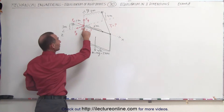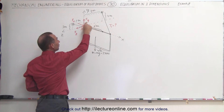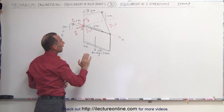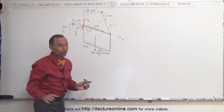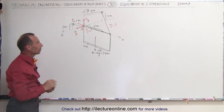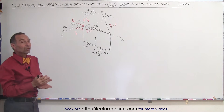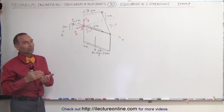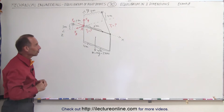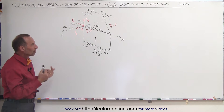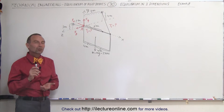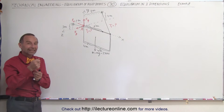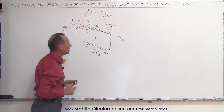We're trying to find the reactions at A: the force in the x, y, and z directions, and tension one and tension two. Once we find tension one and tension two, the other forces come out easily by summing all components in the x, y, and z directions and setting them equal to zero. Before solving, we should find the direction cosines of each cable — we want to know what direction the tension pulls relative to the x, y, and z axes.